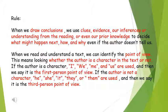When we read, we can also identify something called point of view. Point of view means looking and understanding whether the author or the writer is a character in the text or not. If the author is a character, we will see the usage of the pronoun "I" mainly, or "me", or "we", or "us". In that case, we call it a text written using the first person point of view.